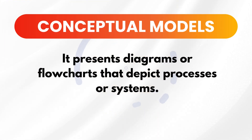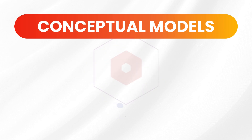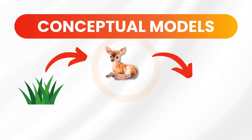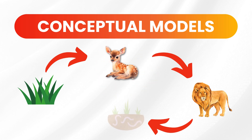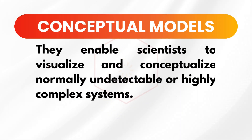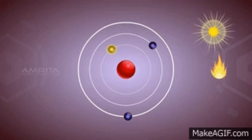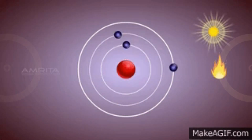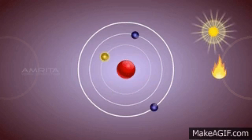The third type of scientific model is conceptual models. These present diagrams or flowcharts that depict processes or systems. For example, the food chain shows a plant as the producer, eaten by a deer as the primary consumer, then the deer is consumed by a lion, and over time the lion will die and be consumed by worms which act as decomposers. Conceptual models enable scientists to visualize and conceptualize normally undetectable or highly complex systems. The Bohr model of an atom, which depicts electrons revolving around the nucleus, is a classic example providing a simplified feature of atomic structure.